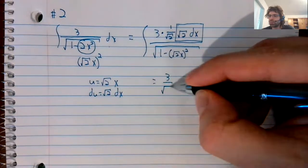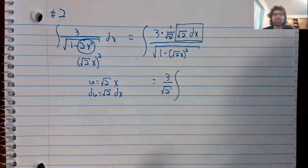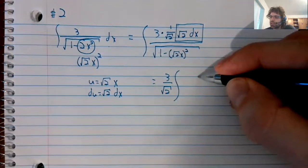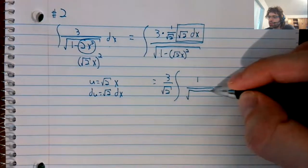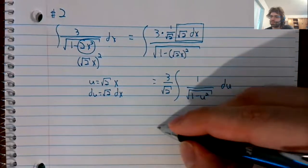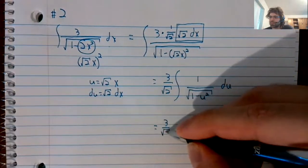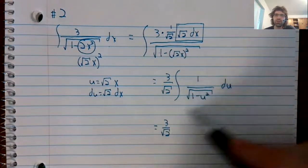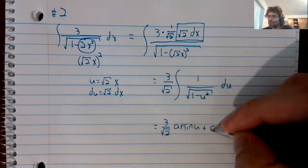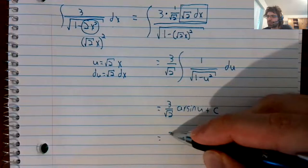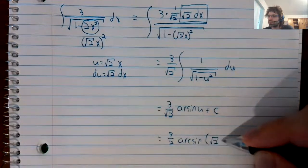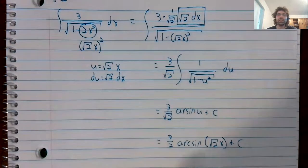This will give us du. This will give us one minus u squared. The three and the square root of two aren't giving us anything, but they're constants. We can yank them out. And we get one over the square root of one minus u squared. This is the arc sine of u, this indefinite integral. And u, of course, is a dummy variable. It's the square root of two times x.